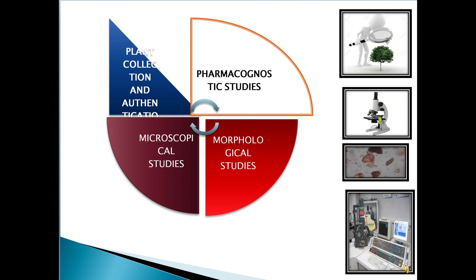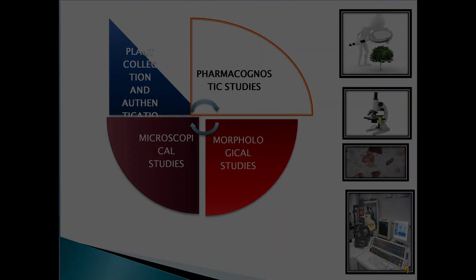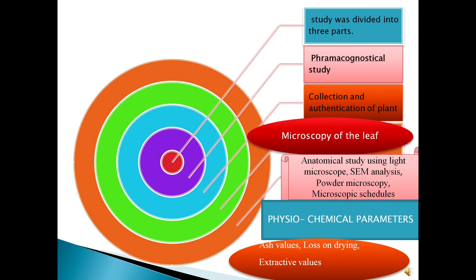The pharmacognostical studies include plant collection and authentication. First, you have to identify the name of the drug. Then morphological studies — the external characters of the crude drug. Then microscopical studies — the internal characters. You cut into thin sections under the microscope and observe various characters like stomata, various types of trichomes, and various types of stomata like paracytic, anomocytic, and anisocytic — these are determinants of microscopical character studies.